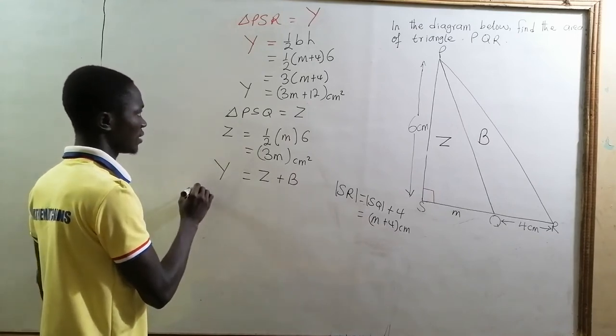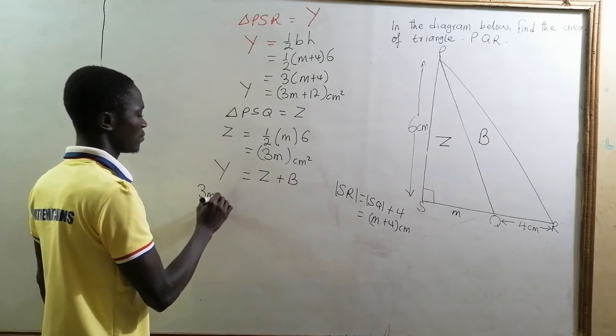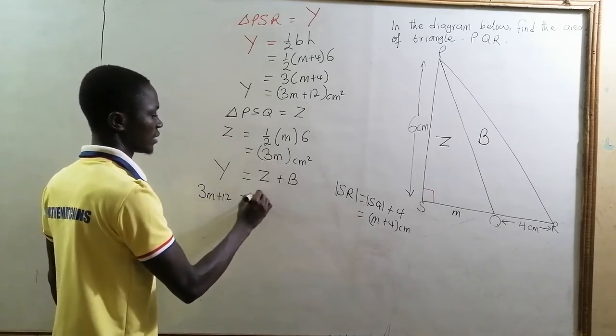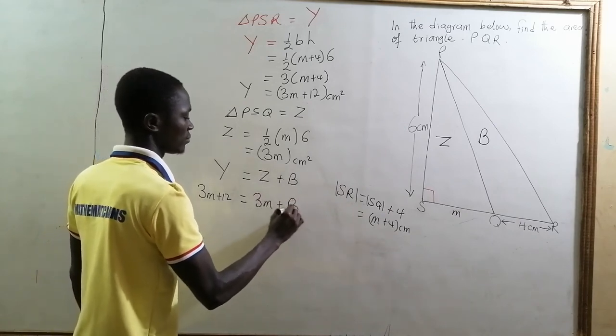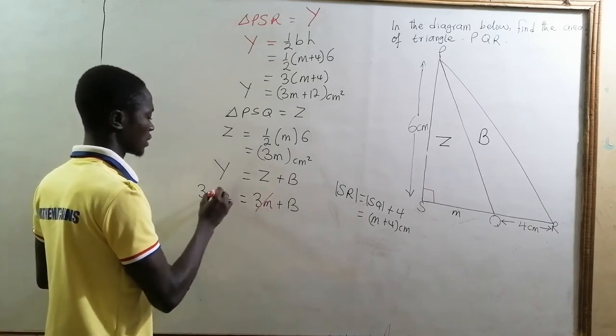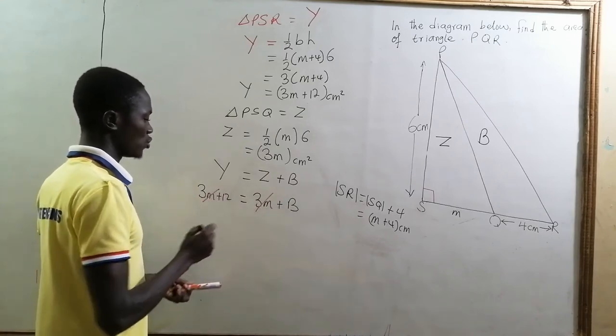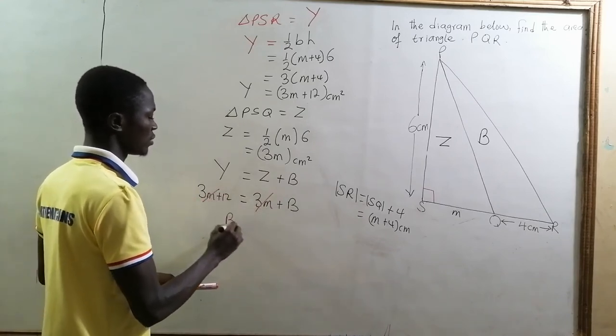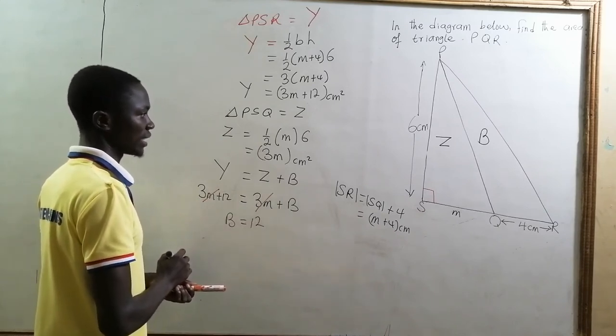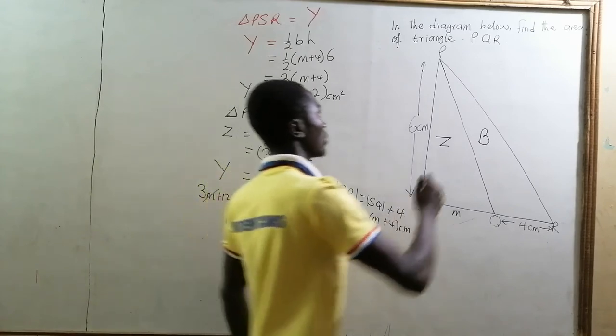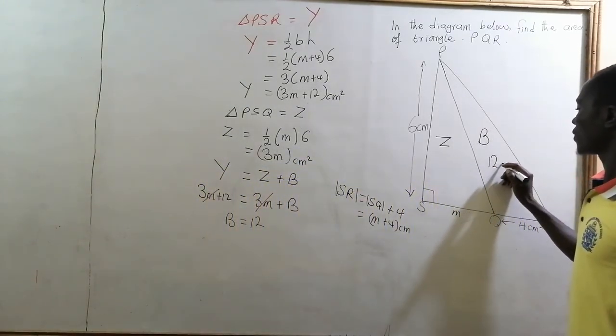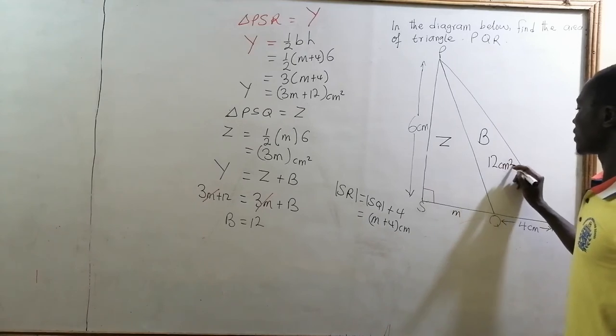So we have here 3M plus 12 equal to Z, and it is 3M plus P. So here, 3M will cancel 3M, and we are going to have P to be equal to 12. So it implies that the area of triangle PQR is 12 centimeters squared.